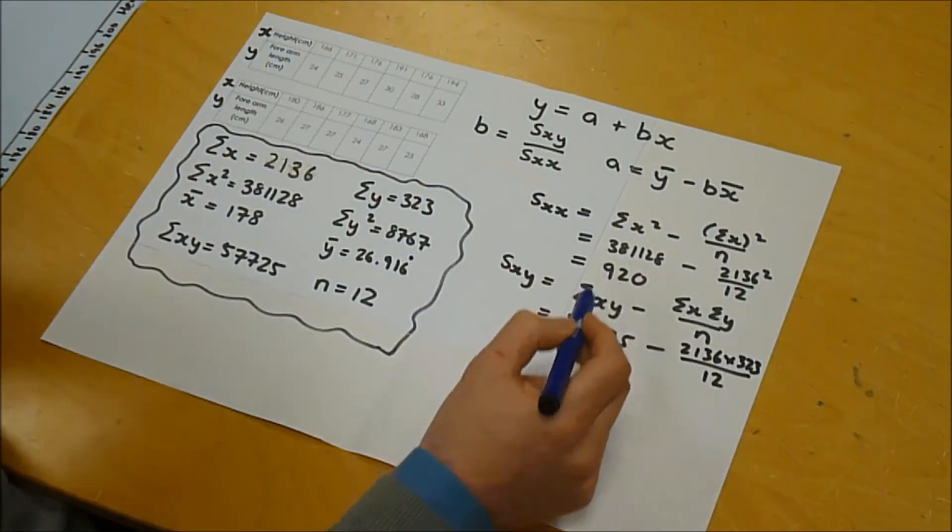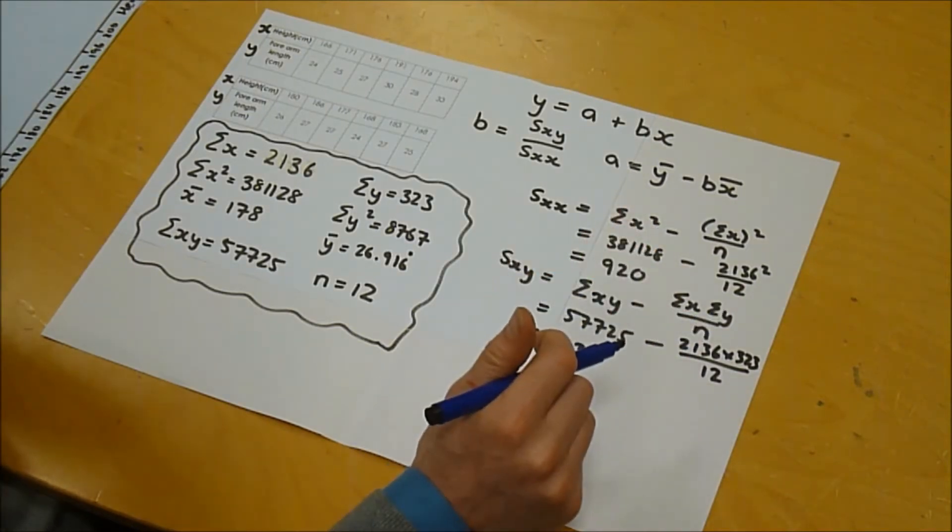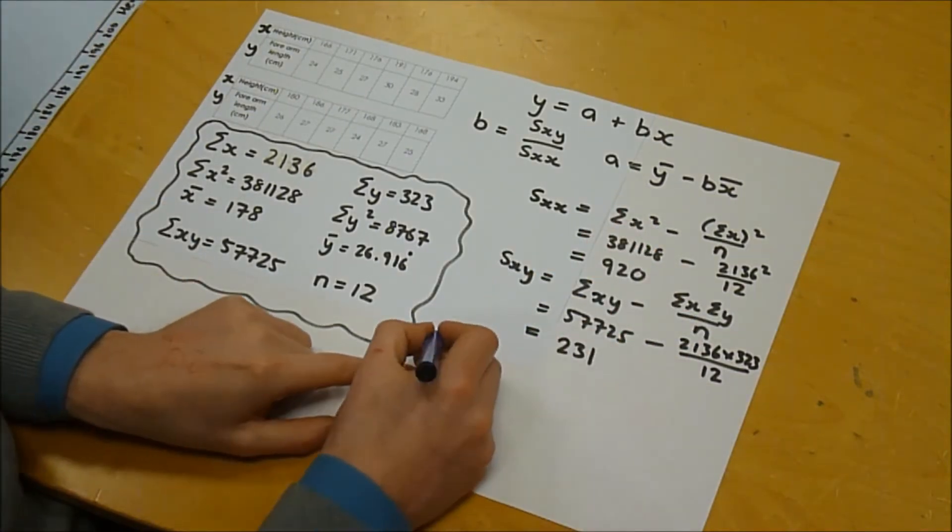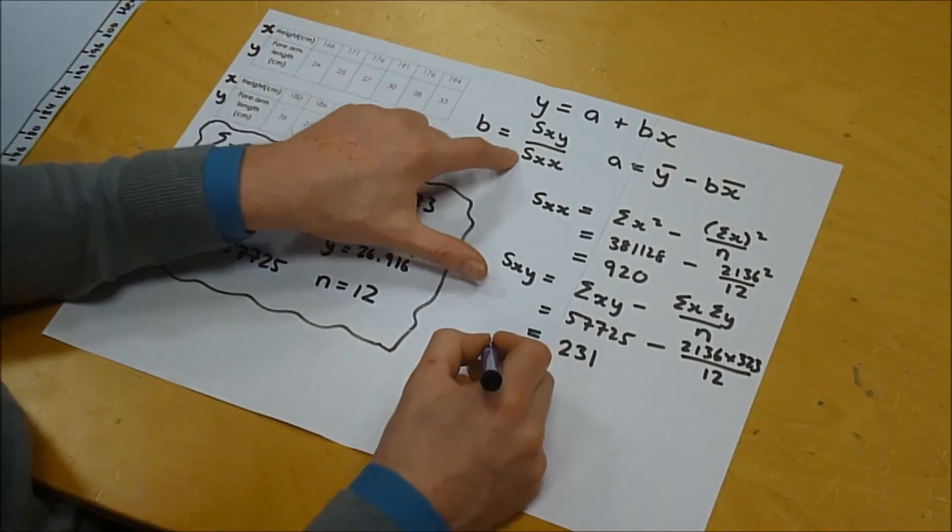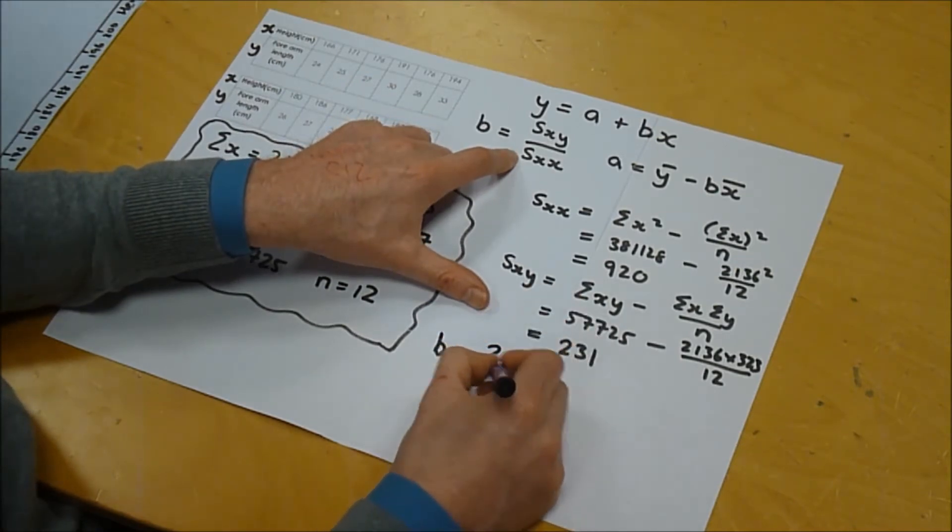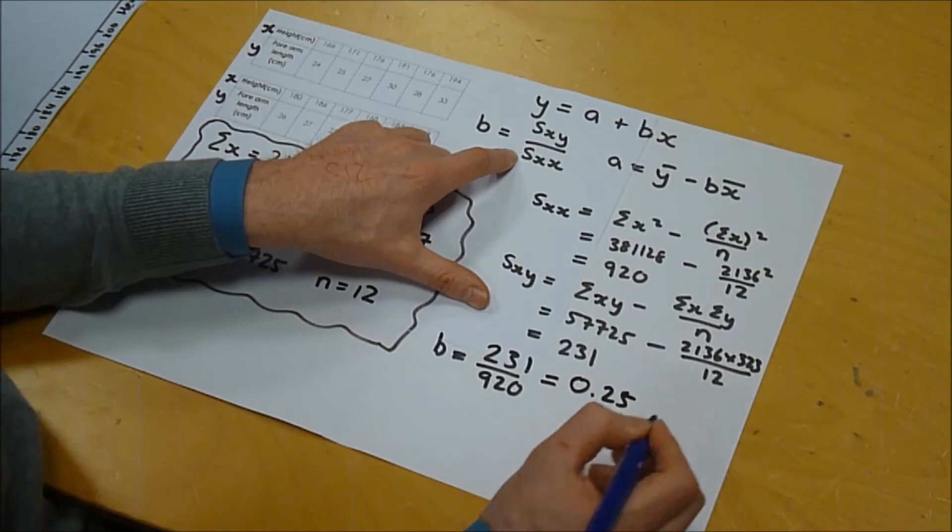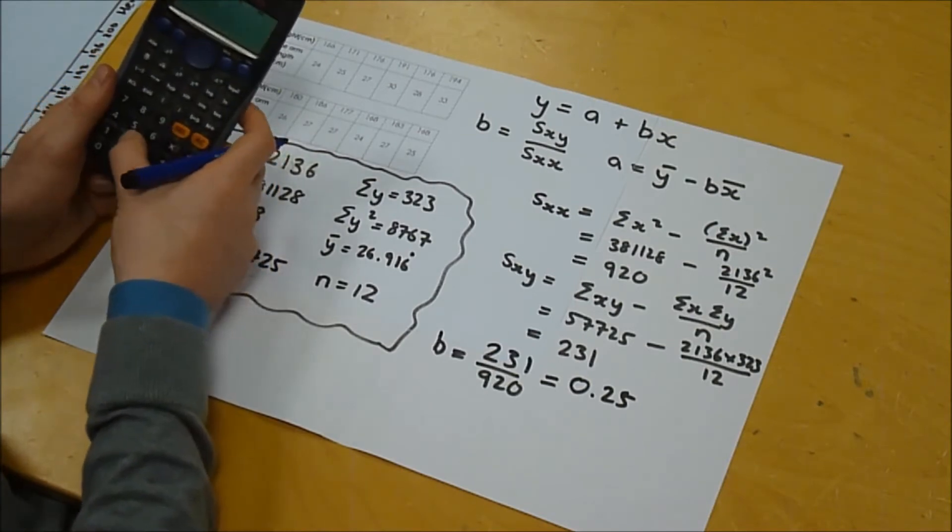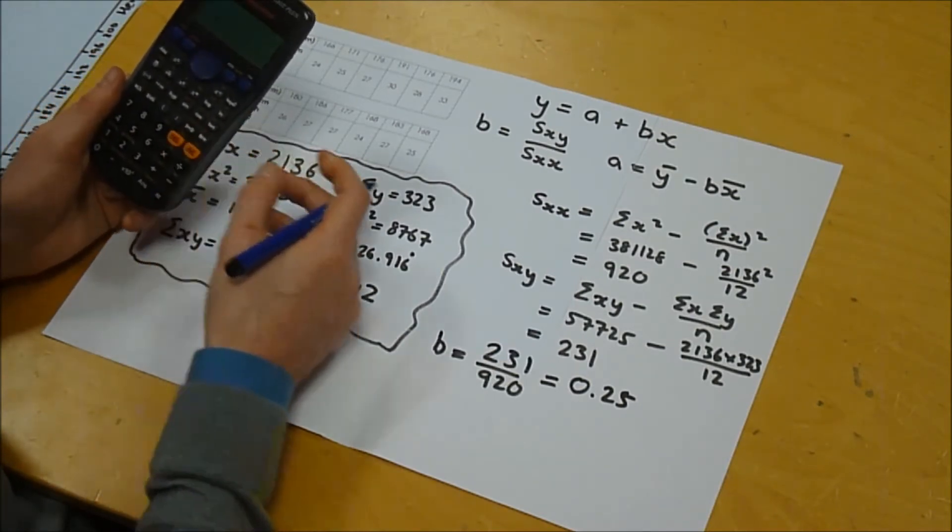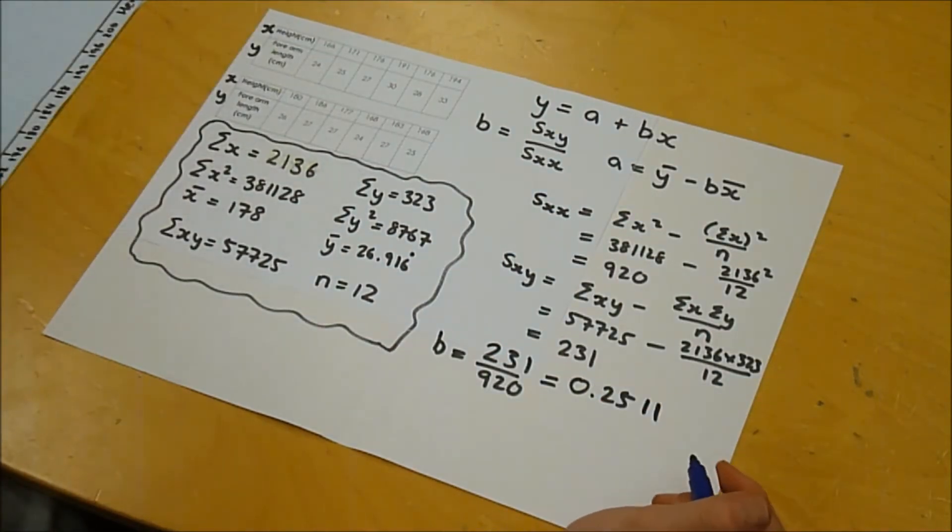Now, these figures don't always come out quite as nicely as they have done in this example, so don't expect them always to be an integer. Right, well now we can work out b. Well, b is s of xy over s of xx, so that's 231 over 920, and when we do that it comes out as 0.25 something. Let's just verify that: 0.251, okay, four decimal places.